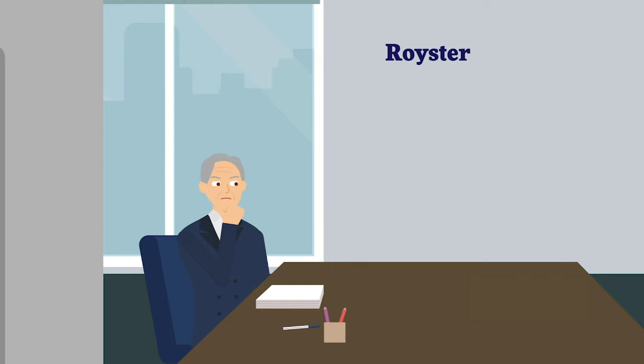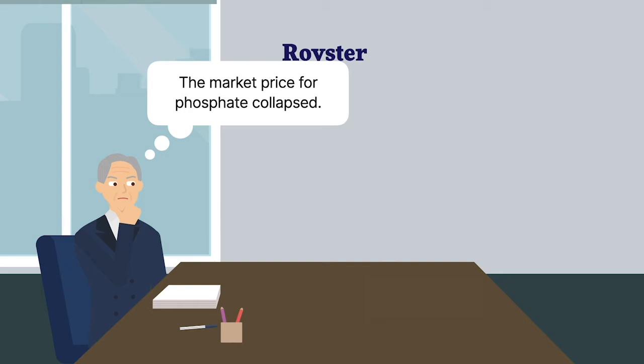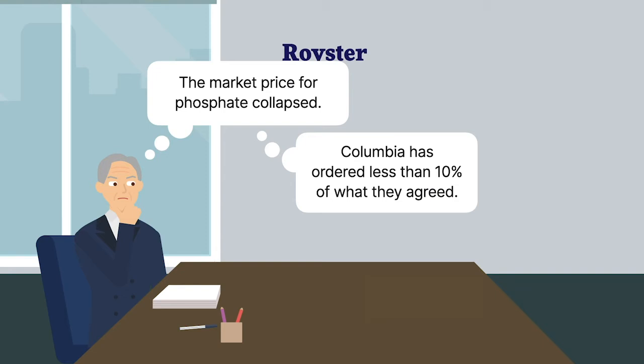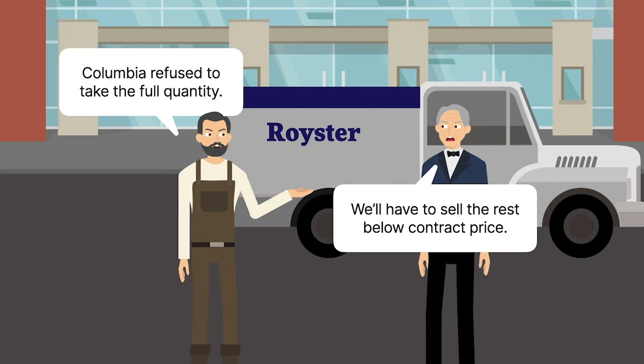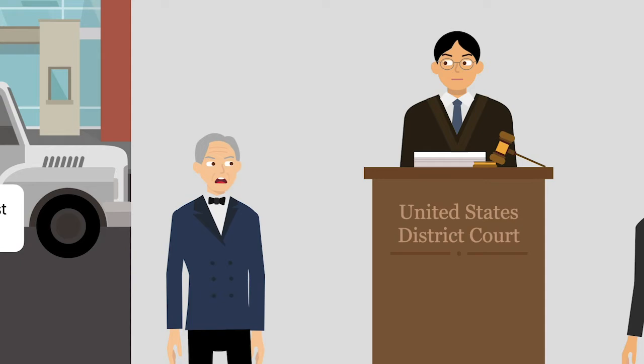After the parties signed the contract, the market price for phosphate collapsed. Consequently, in the contract's first year, Columbia ordered less than 10% of the phosphate it had agreed to buy. When Columbia refused to take delivery of the full quantity, Royster sold the remaining undelivered phosphate substantially below the contract price.